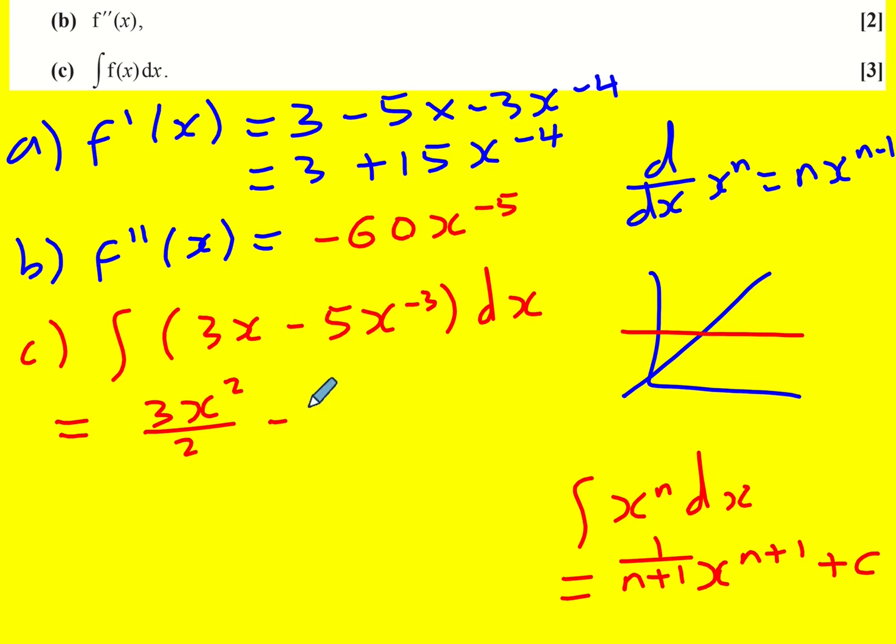And then here I'm just going to deal with the x to the minus 3 separately, so I'm going to add 1 to the power and divide by the new power. So when I add 1 to the power, it actually becomes less negative, and remember I'm timesing here, and I've got a plus c.